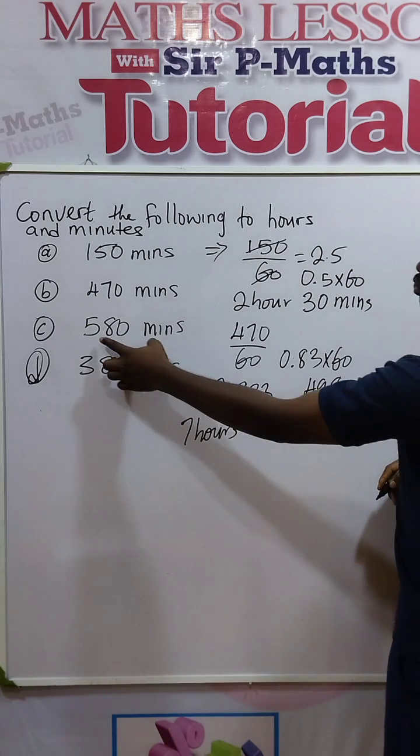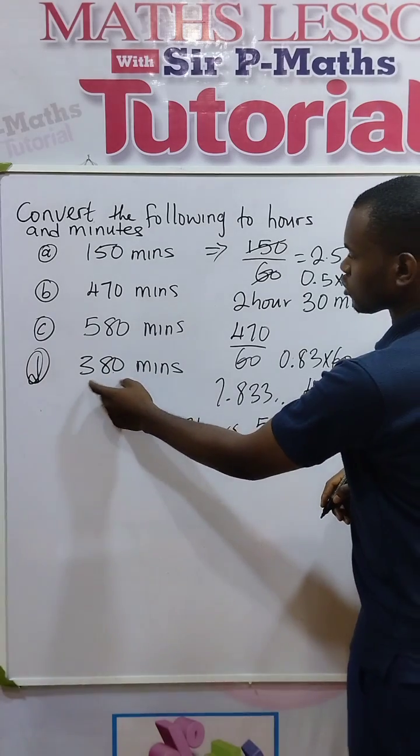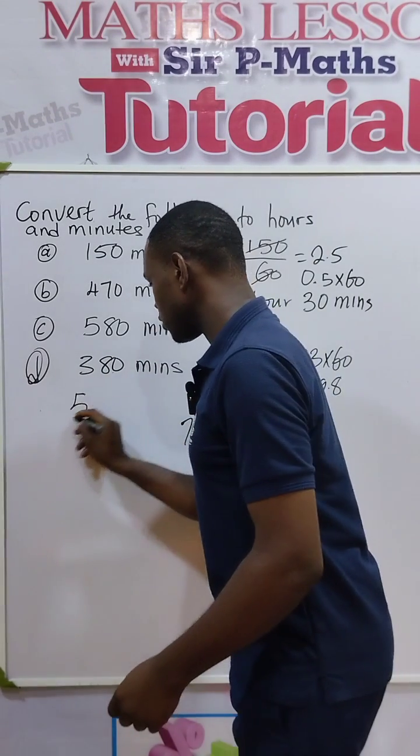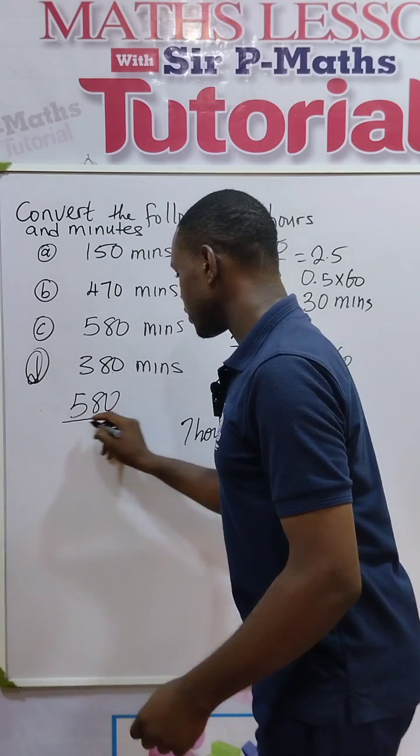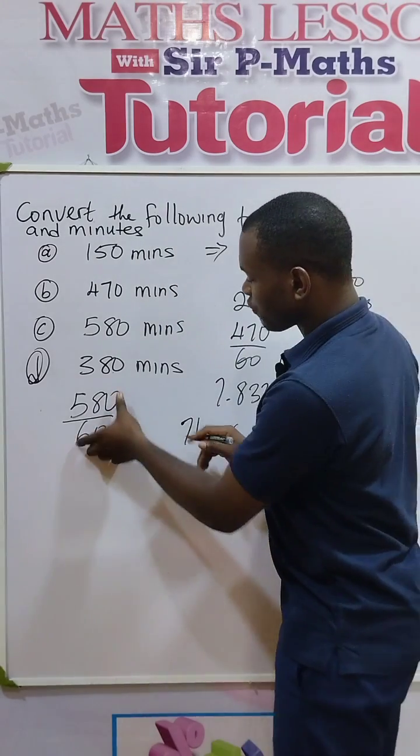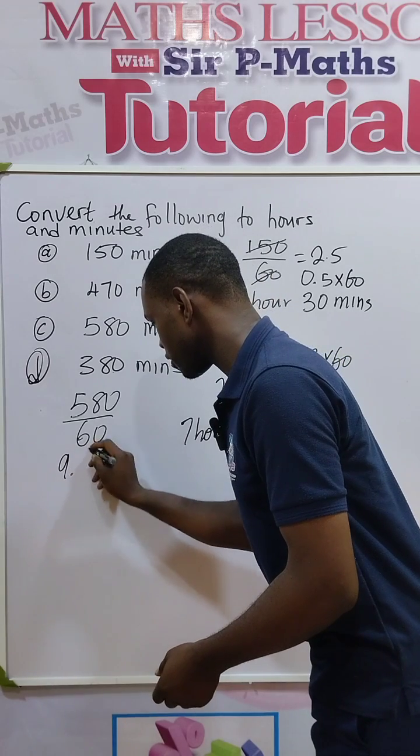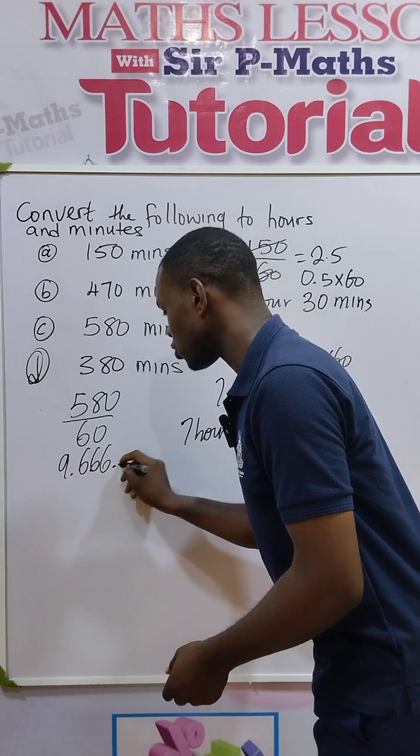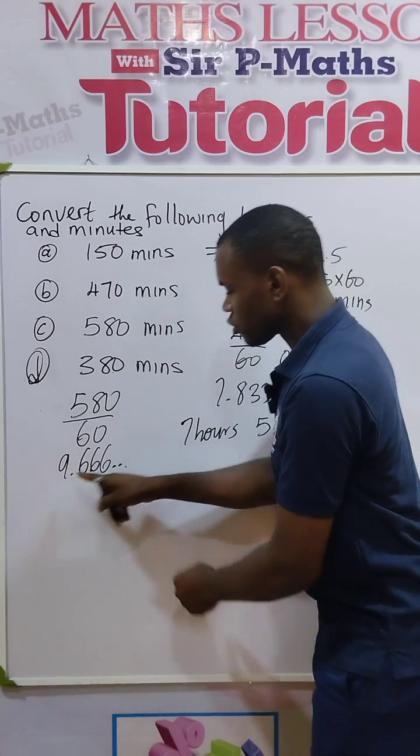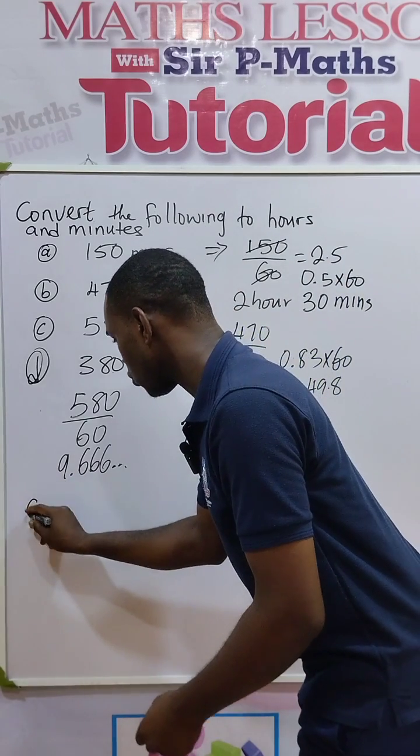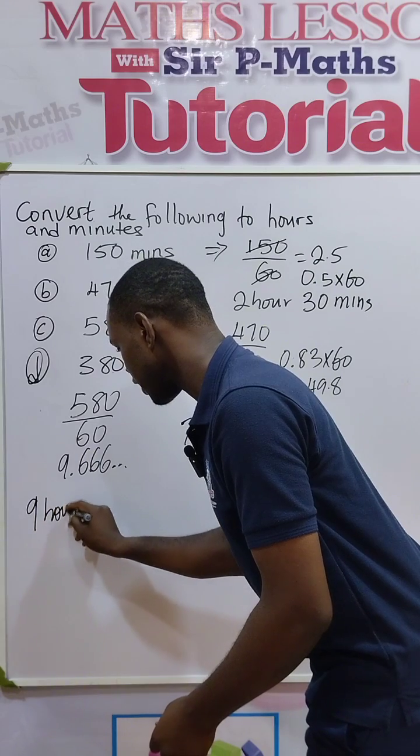And then lastly, I will do this and I will allow you to do this one. So we have 580 divided by 60. When we divide here, we obtain 9.666. It's also a recurring decimal. So take your 9 as your whole number. That is 9 hours.